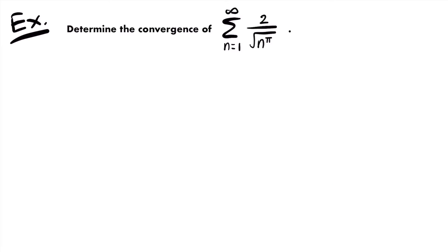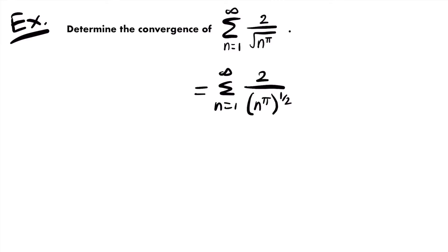Here's our next example. We want to determine the convergence of the sum from n equals 1 to infinity of 2 divided by the square root of n to the power of pi. This doesn't look like a p-series at first, but we can rewrite the square root as the one-half power, giving us 2 divided by n to the power of pi to the one-half power. Since we have a value raised to an exponent that is itself raised to an exponent, we multiply those exponents: pi times one-half gives pi divided by 2. So this equals the sum from n equals 1 to infinity of 2 divided by n to the power of pi divided by 2.